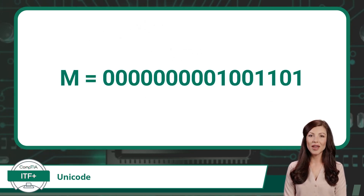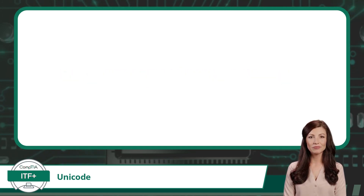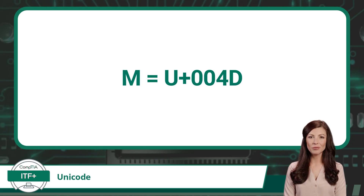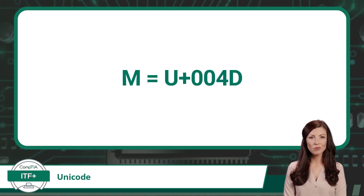Unicode may convert any one of these languages' characters into a 16 binary digit value, but for human readability it will often reference the binary value as its hexadecimal equivalent. Unicode's adopted naming convention consists of a U followed by a plus sign and ending with four hexadecimal digits. In the case of the capital letter M of the Latin alphabet, the Unicode reference would be U+004D.